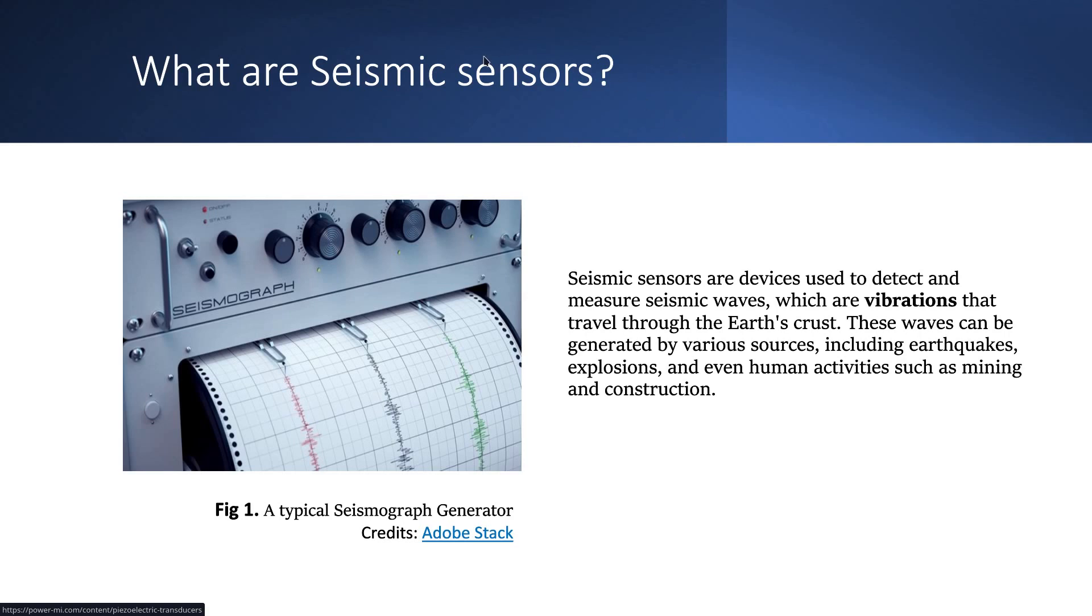So what are Seismic Sensors? Seismic sensors are basically sensors that sense the vibrations on the surface of the earth or on any surface that the sensors are placed on. These sensors are typically used to measure and quantify the vibrations occurring on the surface of the earth due to natural phenomena like earthquakes or due to human activities such as mining, constructions, or any explosion that may cause the earth's crust to vibrate.